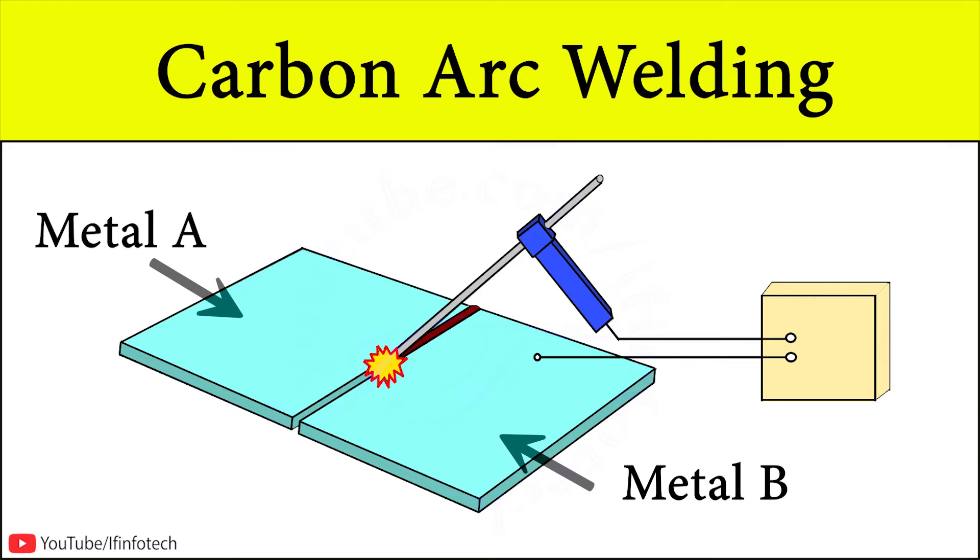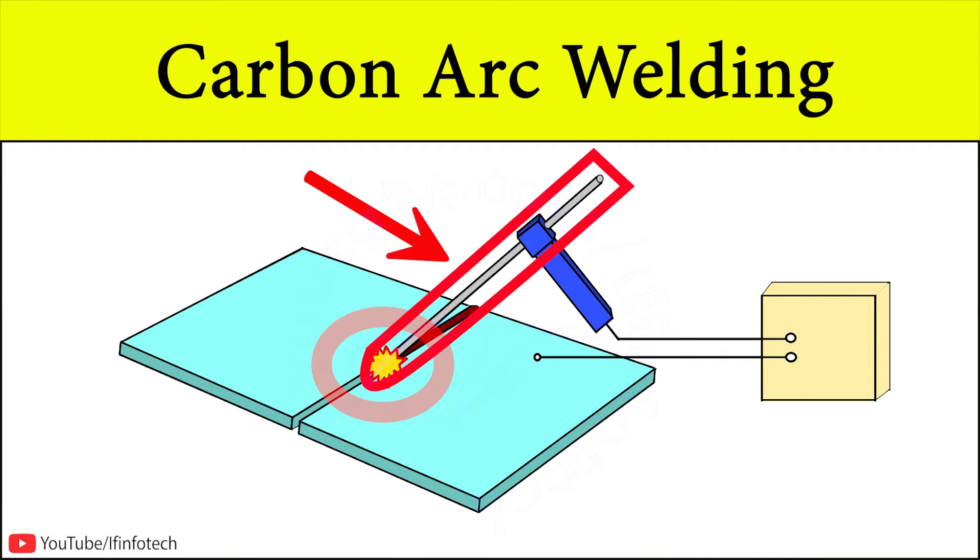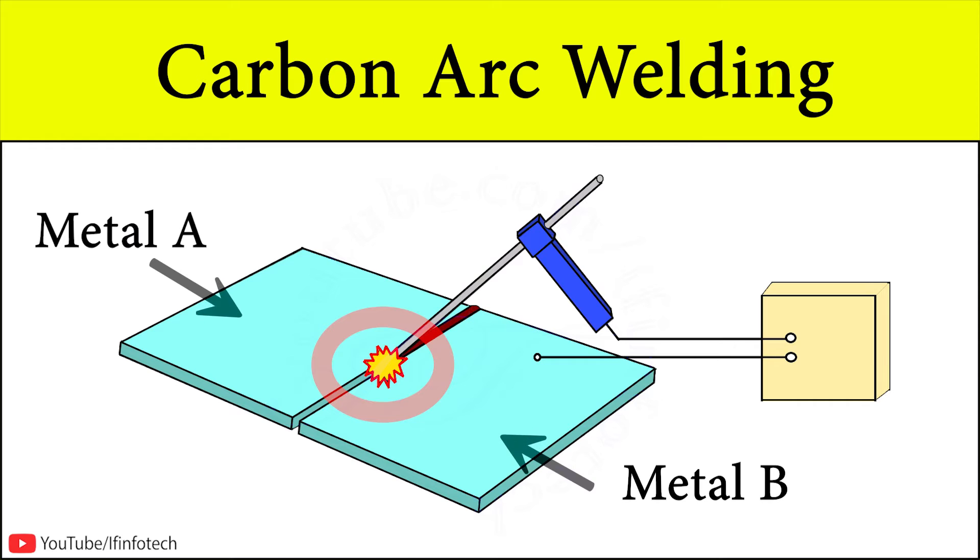In this process the joining of metal parts by heating with an arc between carbon electrode and workpiece. Here the arc is going to heat and melt the workpiece edges forming a joint.